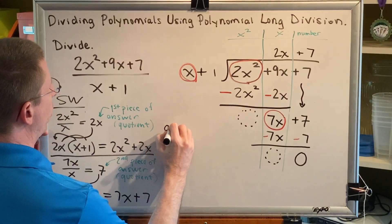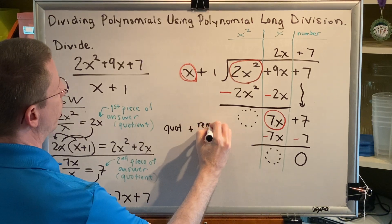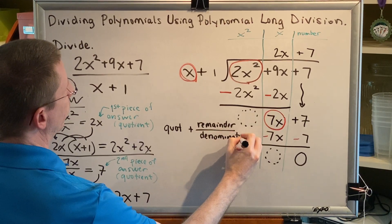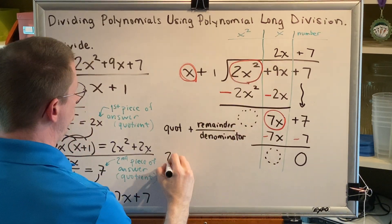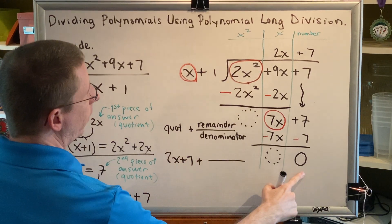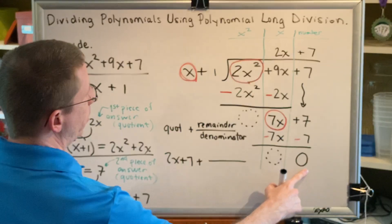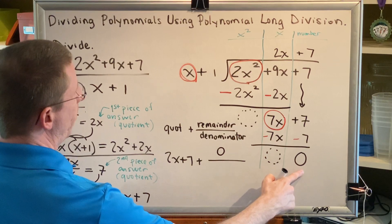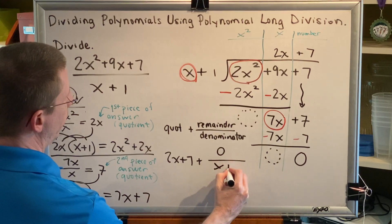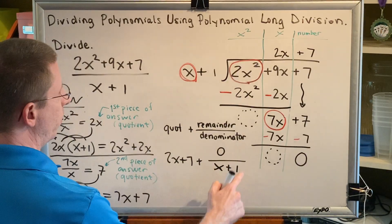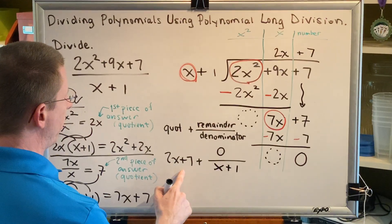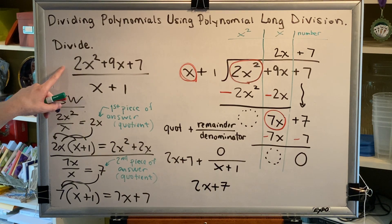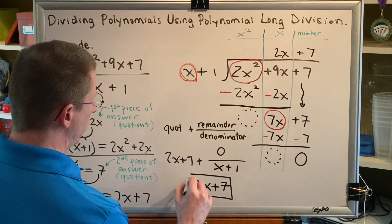The final answer is always written in this form: the quotient plus the remainder divided by the original denominator. Our quotient was 2x plus 7. The remainder is what you have left over once the exponent in the lowest under is less than the biggest exponent of the denominator — in this case, the remainder is 0. The denominator is the original x plus 1. Since 0 divided by x plus 1 is 0, and adding 0 doesn't change anything, this simplifies to 2x plus 7. So 2x squared plus 9x plus 7 divided by x plus 1 gives the result 2x plus 7.